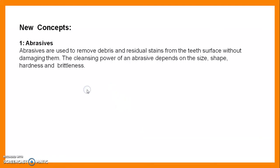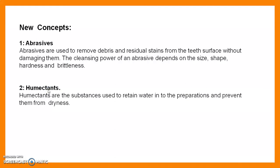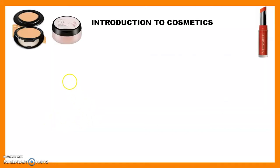We will see some new concepts. Abrasives are used to remove debris and residual stains from the teeth surface without damaging them. The cleansing power of an abrasive depends on its size, shape, hardness, and brittleness. Humectants are substances used to retain water in the preparation and prevent dryness, maintaining proper moisture content.